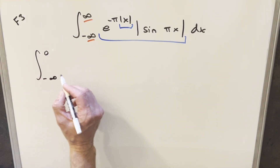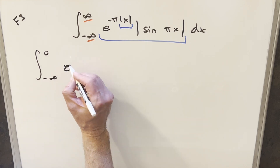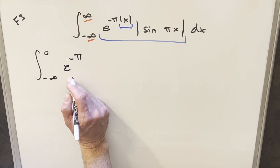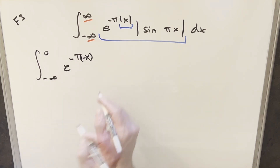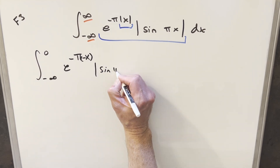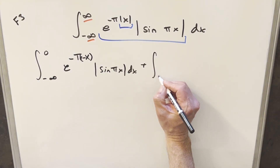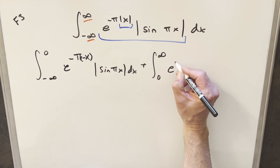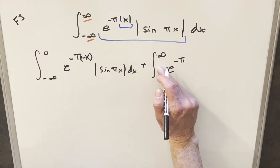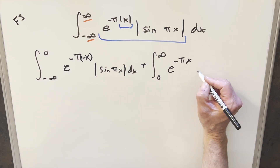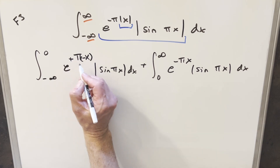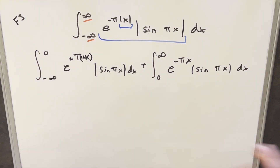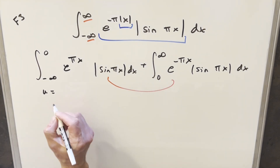The first integral goes from minus infinity to zero — in this region x is always negative, so I can drop the absolute value on x but bring a minus out front, while leaving the absolute value on sine pi x. For the second integral, going from zero to infinity, everything's positive so I can just drop the absolute value on x, giving minus pi times x in the exponent, but we still need to keep the absolute value on sine pi x. Then I want to put these two back together using a u-substitution: let u equal minus x.